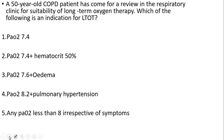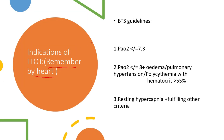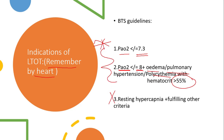Read the question very carefully and try to answer it before looking at the solution. The answer for this question is option number 3. This is something you have to remember by heart — very, very important. PaO2 less than or equal to 7.3, and PaO2 less than 8 with any feature of edema, pulmonary hypertension, or polycythemia with a hematocrit of more than 55%. These two criteria are extremely important — you have to remember them.